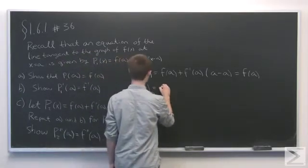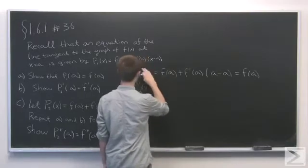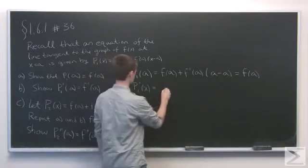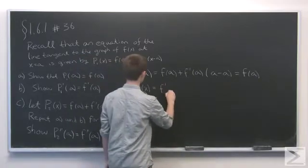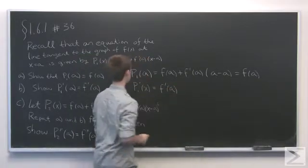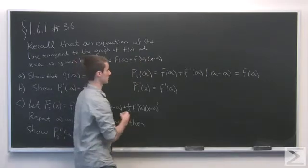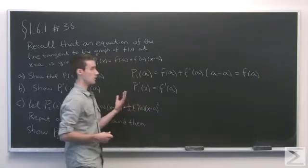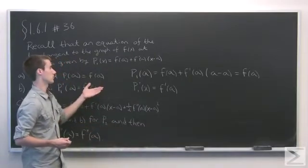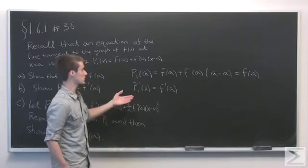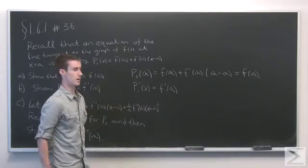And we're left with f'(a) times x, whose derivative is f'(a). And f'(a) times a, which is a constant, so it goes to zero. We see that the derivative of the tangent line is the same as the derivative of the function, and they actually agree at that point.